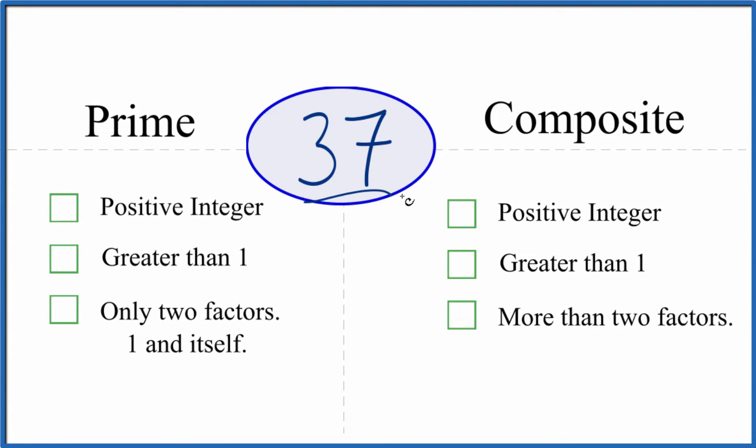How can you tell whether 37 is a prime number or a composite number? Here's how we do it. Let's start looking whether 37 is prime.